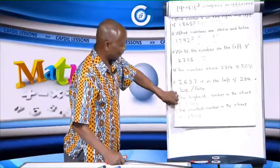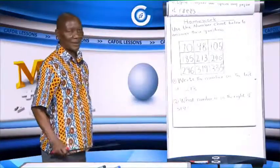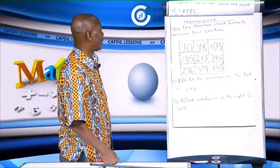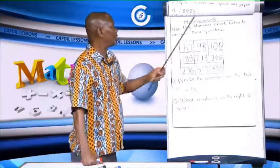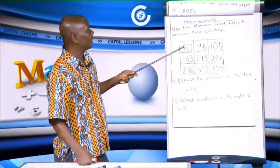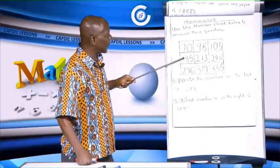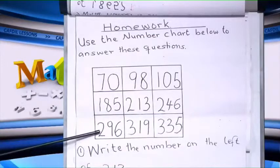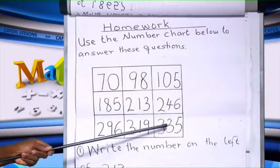Let us continue. Now we have our homework, which reads: use the number chart below to answer these questions. The number chart contains: 90, 70, 98, 105, 185, 213, 246, 296, 390, and 335.